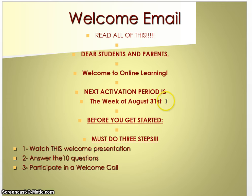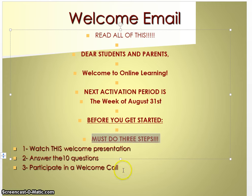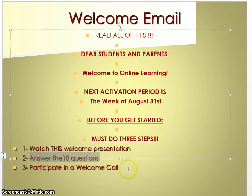What is important for you to know is when your activation period is. So if you're going to be activated the week of August 31st, for example, then you need to make sure you're doing these things prior to that date. There are three steps you need to take in order to get activated. The first one is to watch this presentation. The second one is to answer the ten questions in step two, and make sure you email those back to me. The third step is to participate in a welcome call.